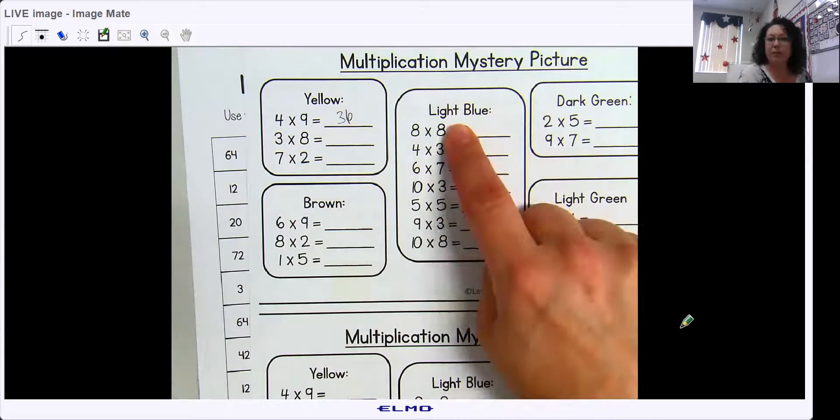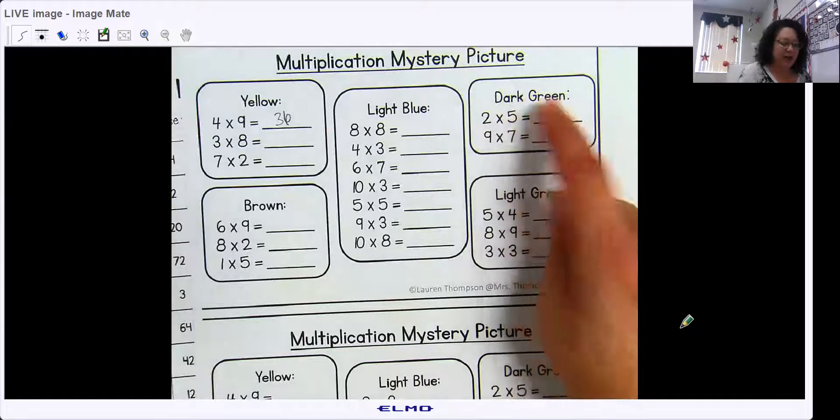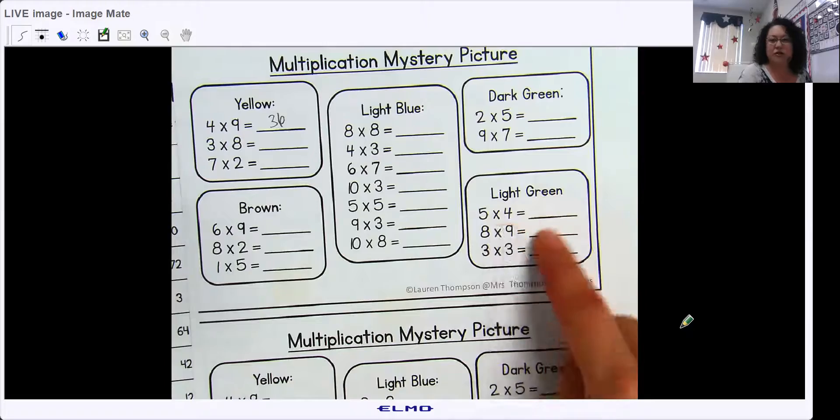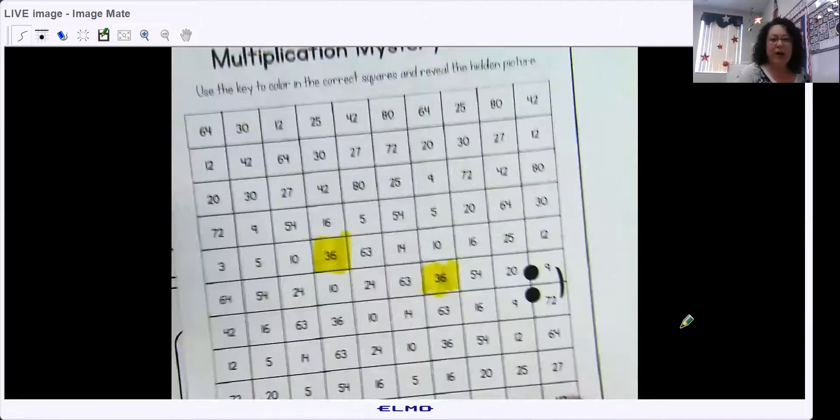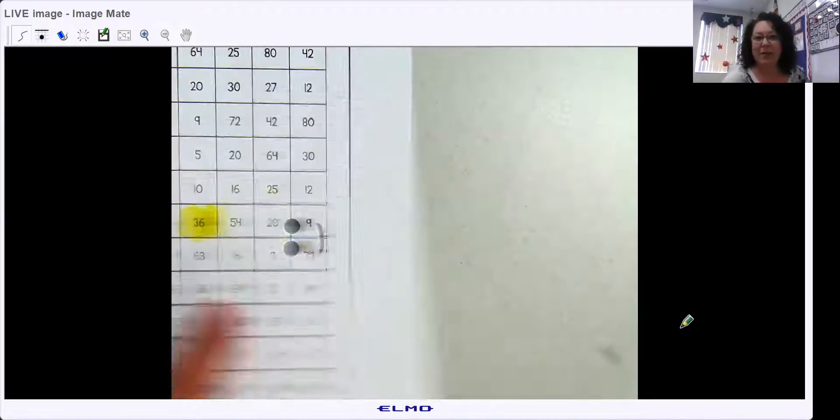These two answers get dark green. And these three answers get light green. And your job after that is to post what your mystery picture is.